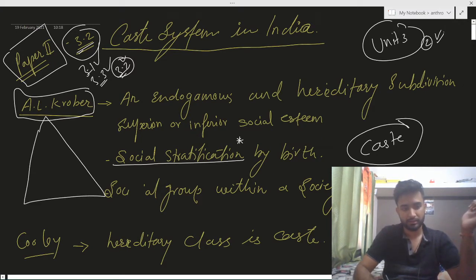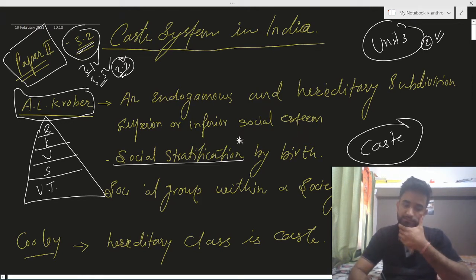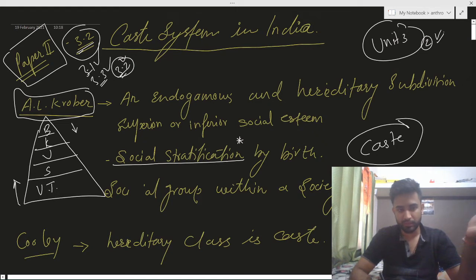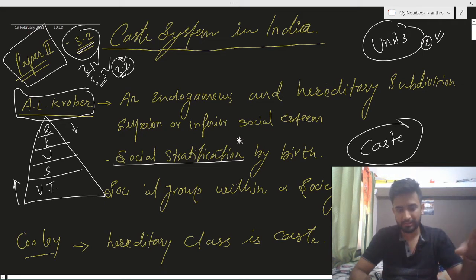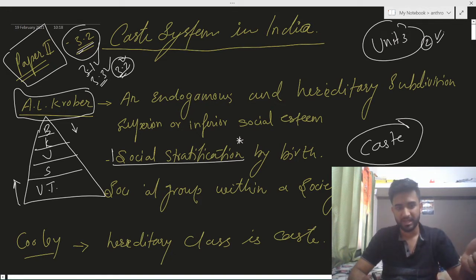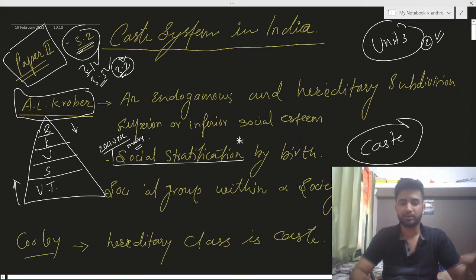Social stratification means: in a society, there is Brahmin, Kshatriya, Vaisha, Shudra, and Untouchable. As we move upward, religious purity increases; as we move downward, pollution increases. This is sanctioned by the sacred complex — by religious specialities. Social stratification was itself a topic in the 2021 UPSC mains optional.